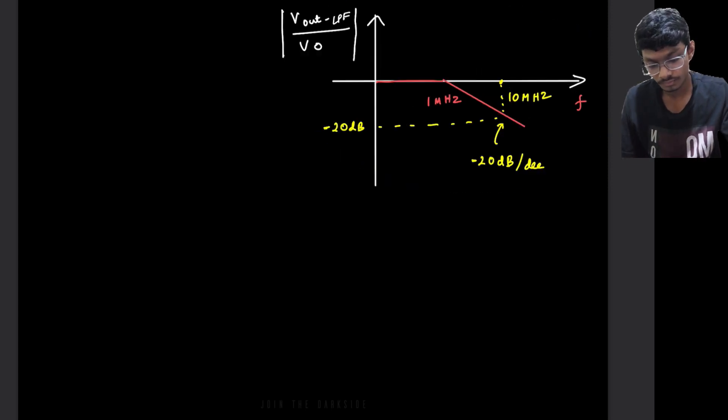So here we have got the 3 dB bandwidth, 1 MHz. So up until 3 dB bandwidth it will have a DC gain. For us it's a unity gain filter so it will be 0 dBs here. Now after that it will decay with a slope of minus 20 dB per decade.